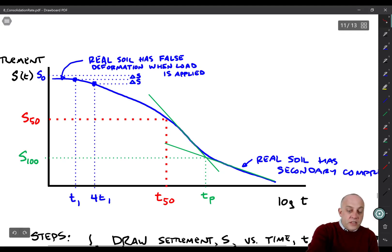You come over here and you get S100. Now we have the initial settlement and the final settlement at the end of primary consolidation. What we do then is linearly interpolate S50. That's at the midway point, that 50% average degree of consolidation. You come over here and you find where it intersects the lab curve, and then you come down. We now have this lowercase T50, the amount of time to reach 50% average degree of consolidation.